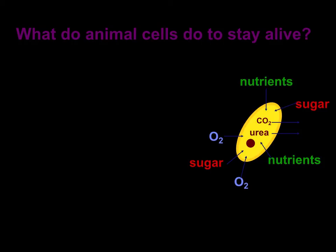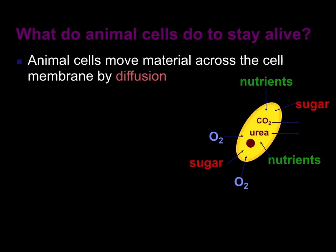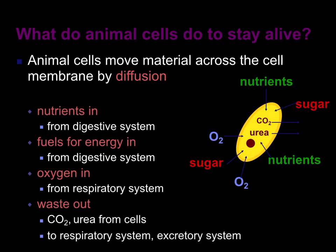What do animal cells do to stay alive? We know that animal cells move material across the cell membrane by diffusion, so they get nutrients in and oxygen in. Respiration occurs and then you've got waste products. How do these waste products move out? You've got carbon dioxide and urea, and these are removed by respiratory and excretory systems.